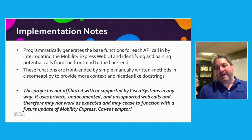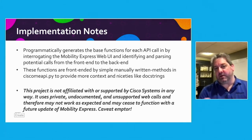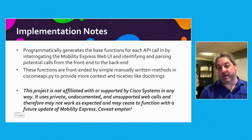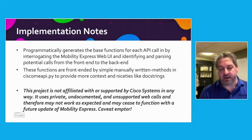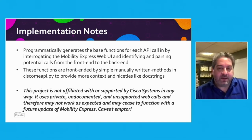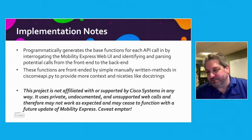Here are a couple of implementation notes about how I developed the SDK. It programmatically generates base functions for each API call by interrogating the Mobility Express web UI, scraping and parsing potential calls from the front end to the back end, generating boilerplate. I then manually create methods that front-end those to provide more context and niceties like doc strings and type hints. Note this project is not affiliated or supported by Cisco Systems. It uses private, undocumented, unsupported web calls and may cease to function with a future Mobility Express update — let the buyer beware.